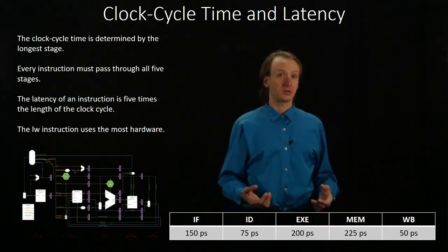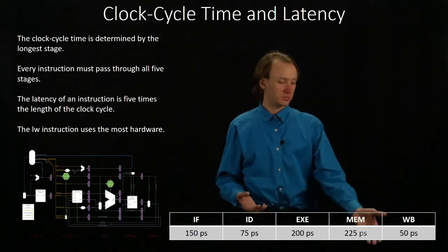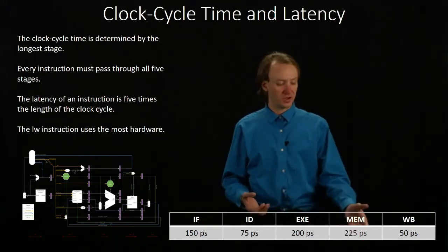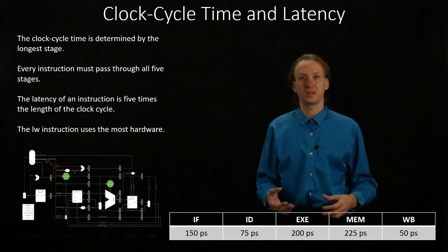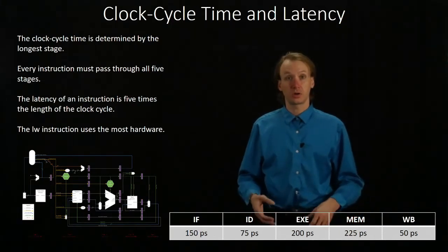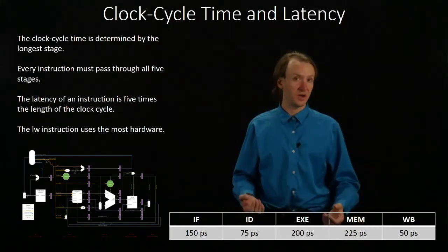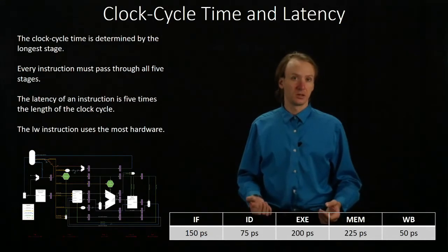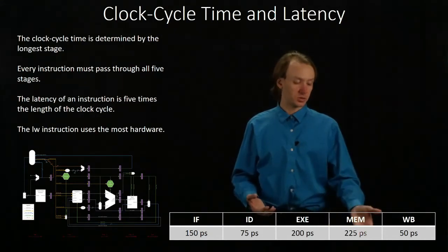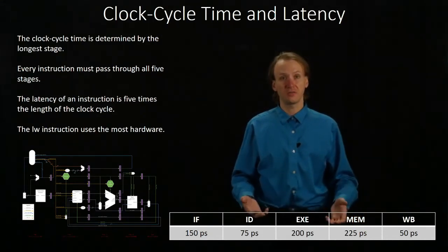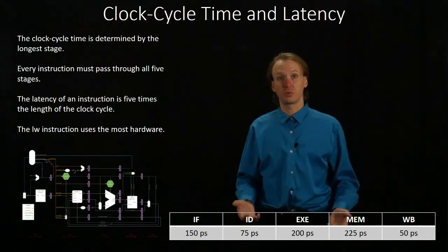In this case, our clock cycle time is going to be dependent on the memory because the 225 picoseconds is larger than any of the other stages. So our clock cycle time would be 225 picoseconds. The latency then is 225 picoseconds times five, so that's 1,125 picoseconds.